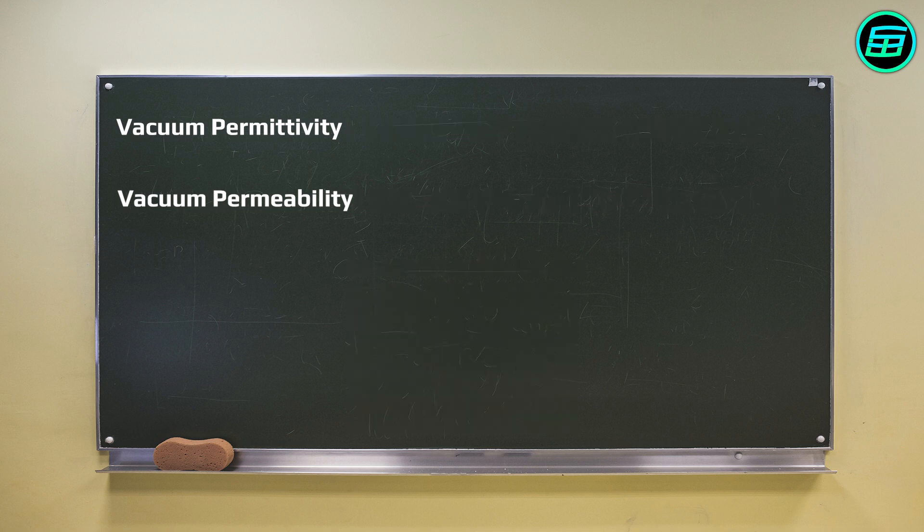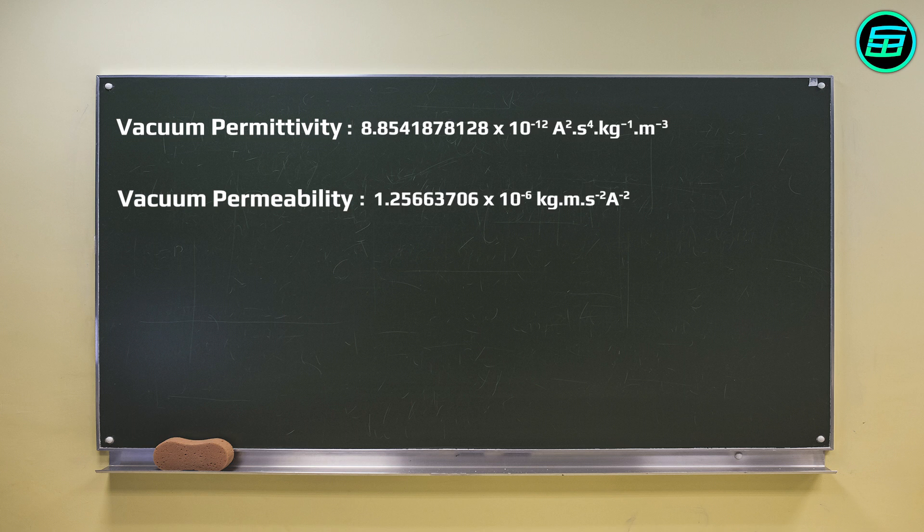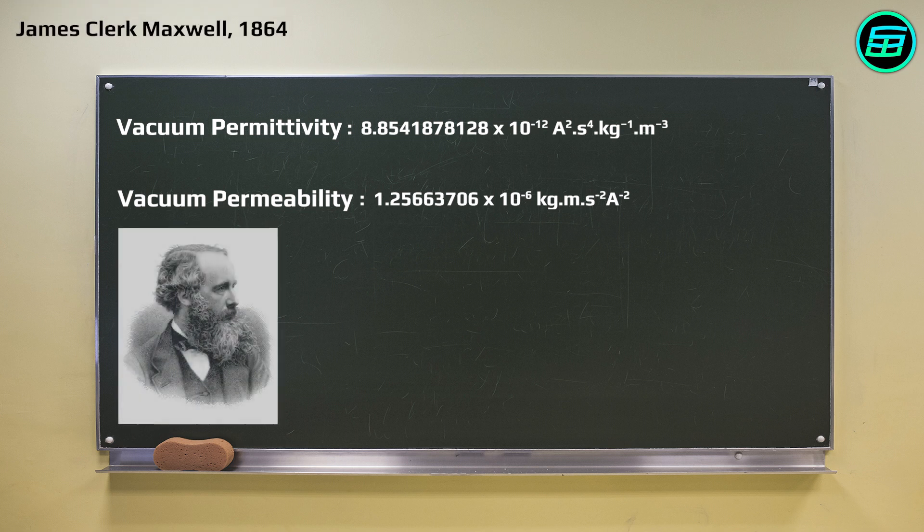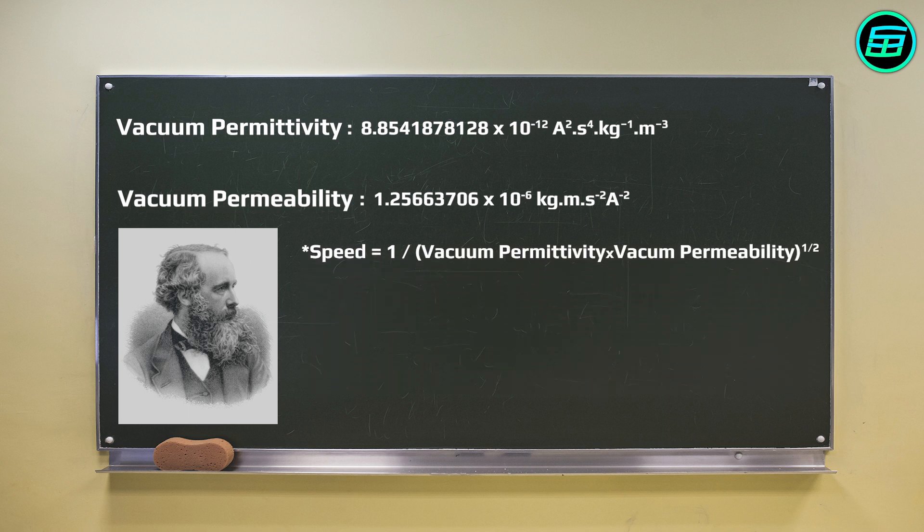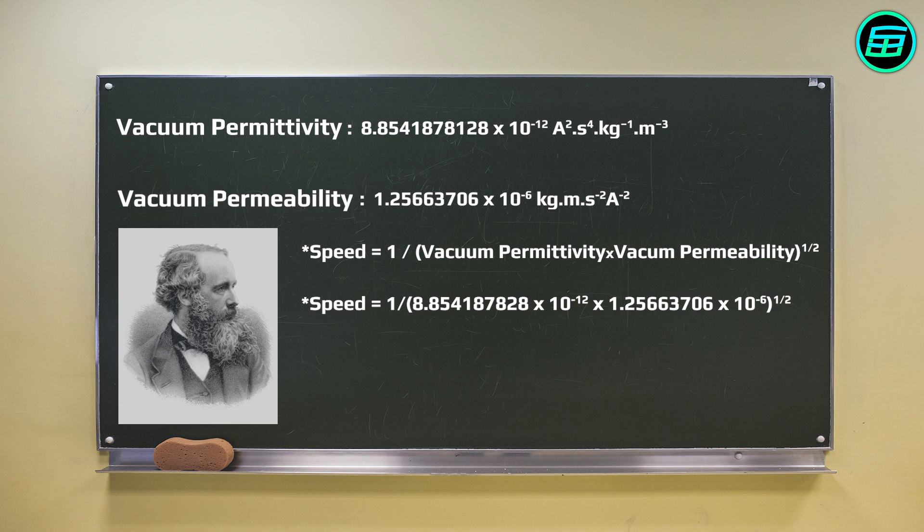We can measure the values of vacuum permittivity and vacuum permeability experimentally. In 1864, Scottish scientist James Clerk Maxwell combined laws found by Faraday, Ampere, Lenz, and Gauss, and found the value of the speed of light.